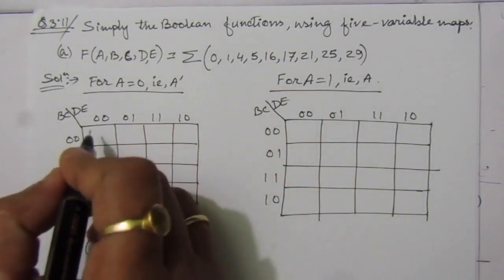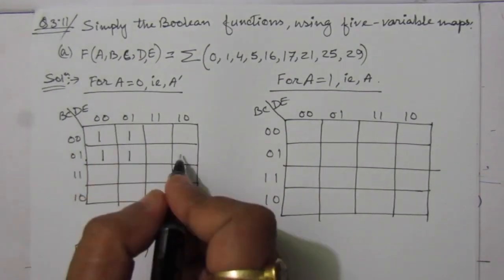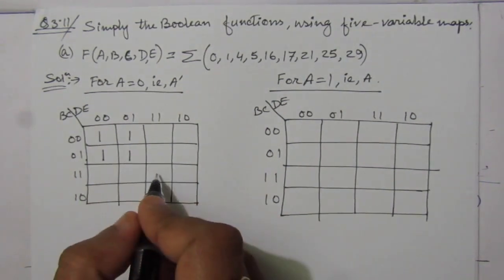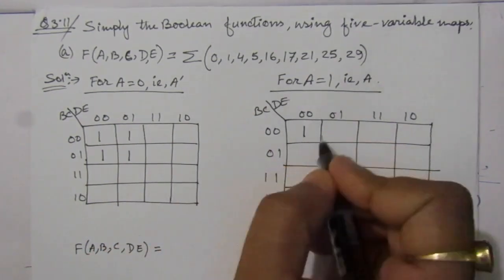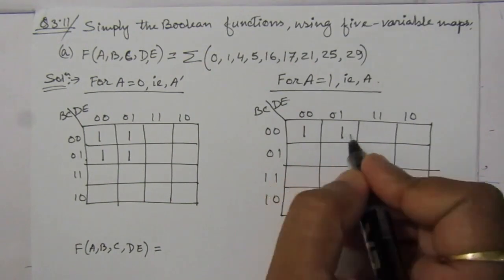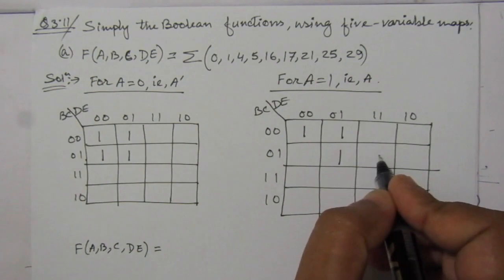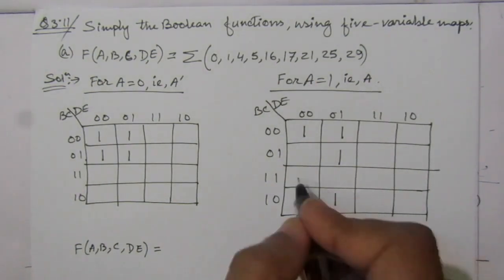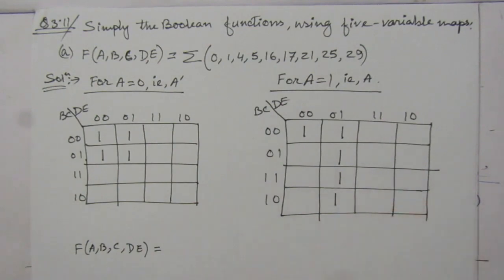We fill in the minterm numbers: 0 through 15 on the first map, then 16 through 31 on the second map. So these are the two 4-variable K-maps covering all 32 minterms for a 5-variable function.